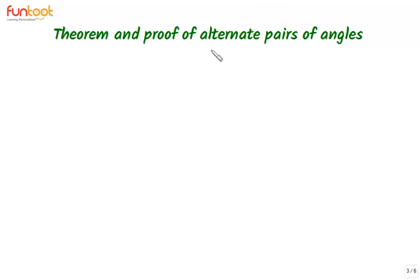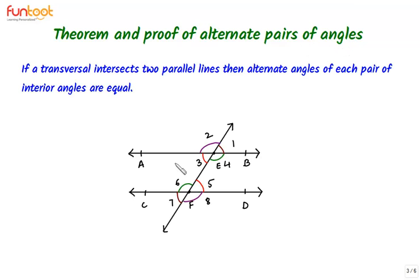Let's understand the theorem and proof of alternate pairs of angles. In this theorem we have two parallel lines AB and CD intersected by a transversal, and these are all the angles formed: angle 1, 2, 3, and 4, and 5, 6, 7, and 8. Angle 3 and 5 are one pair of alternate interior angles, and angle 4 and 6 are the other pair of alternate interior angles.